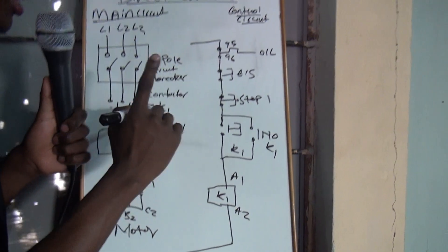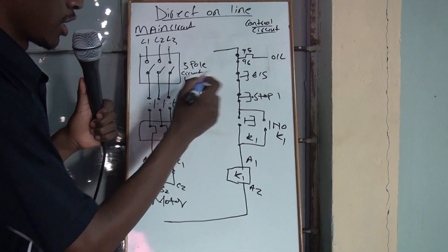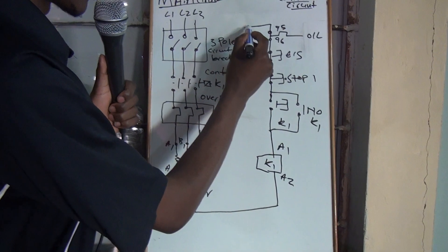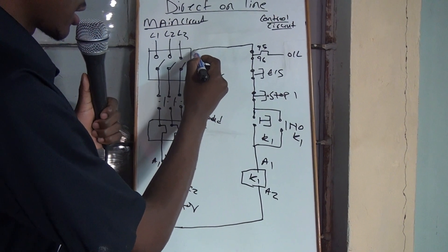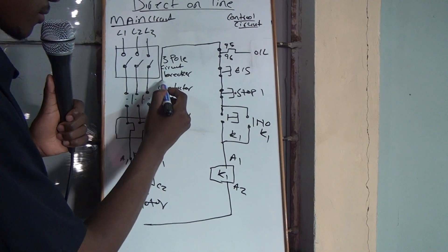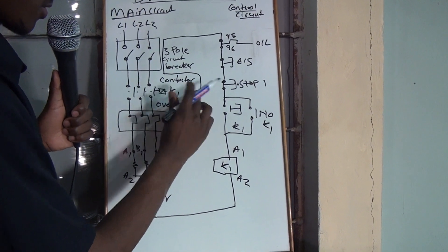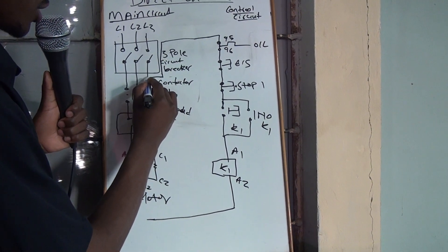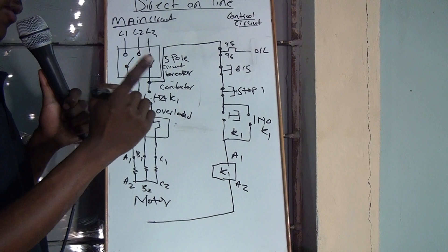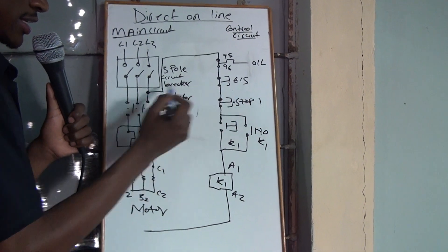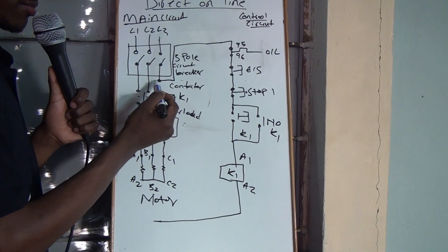And then, there's one thing that you have to keep in mind. When you take power for the control circuit, you'll take it on one of the lines. But now, remember, we are taking power for the control circuit. We take it after the circuit breaker.